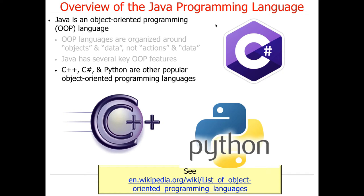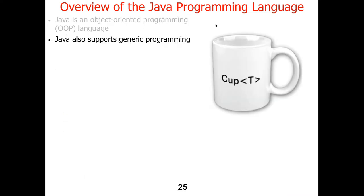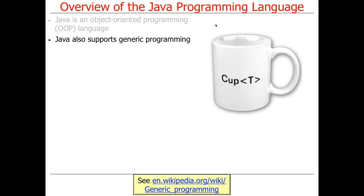The 80s and 90s were all about object-oriented programming and object-oriented design, and you can do some really cool things with that. Early Java was very object-oriented in its nature, but for a variety of reasons that's not the only programming model Java supports. In Java 8, this next model — called generic programming — is becoming almost the predominant approach, and you can mix and match these two paradigms.